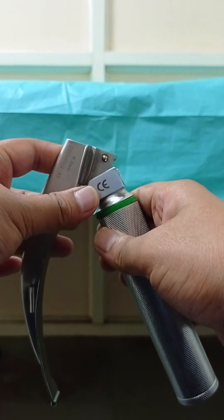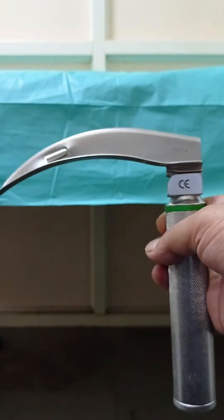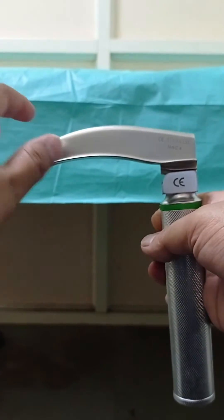When it is connected, you would see the light source is on. Now make the blade straight. Now the laryngoscope is ready to use.